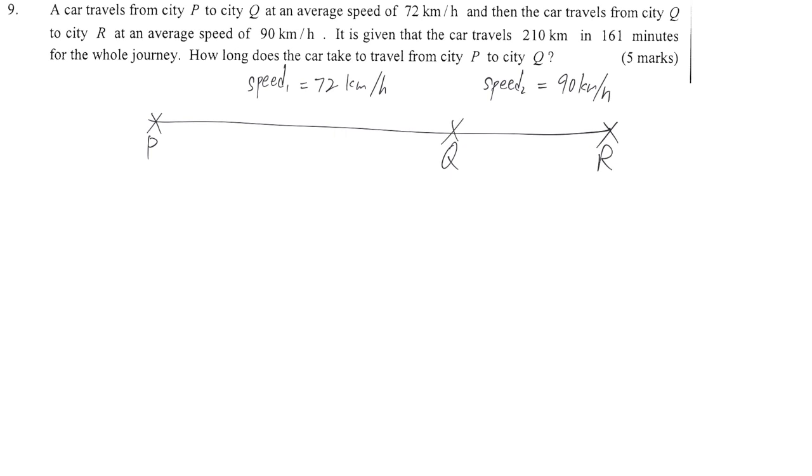So what is given in the next sentence is the whole journey, the total distance is 210 km. The time span, total time, total time is equal to 161 minutes.